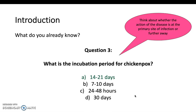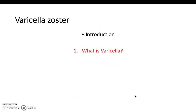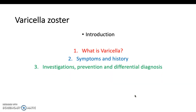The incubation period is 14 to 21 days, but the infective period varies around when you present as well — we'll discuss this shortly. We'll go through what varicella zoster is, symptoms and history, how the child might present, investigations, prevention, differentials, clinical examination, and management.